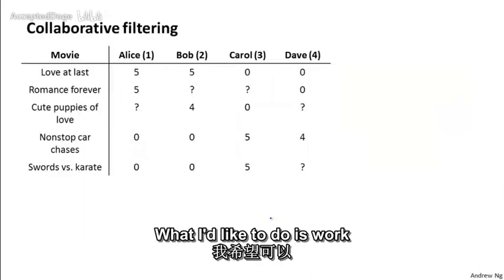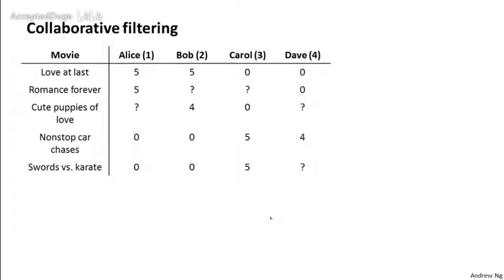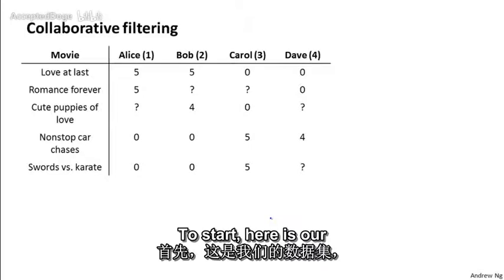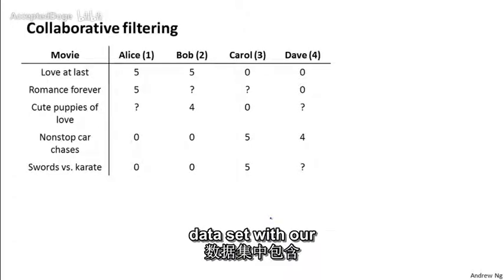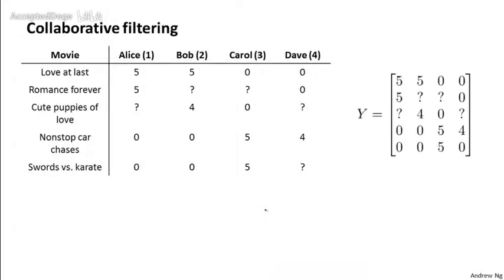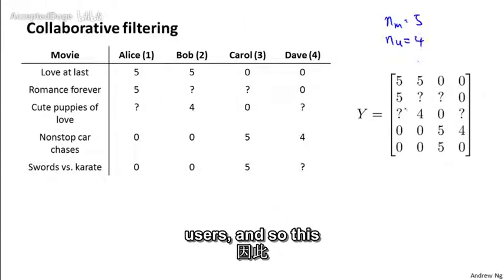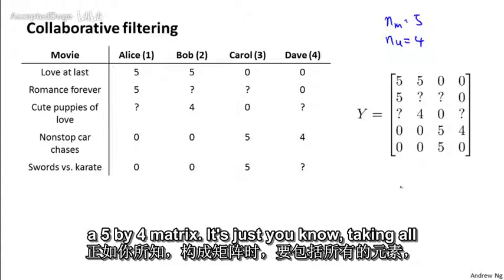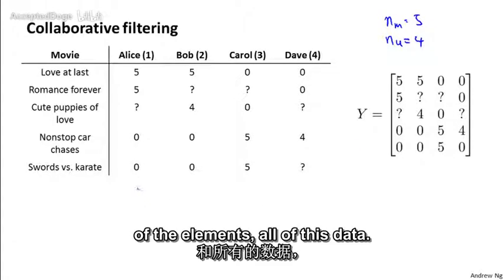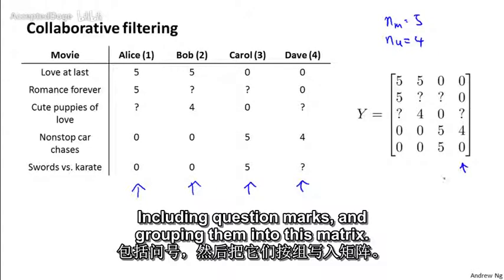What I'd like to do is work out an alternative way of writing out the predictions of the collaborative filtering algorithm. To start, here's our data set with our five movies and what I'm going to do is take all the ratings by all the users and group them into a matrix. So here we have five movies and four users. And so this matrix Y is going to be a five by four matrix, taking all the elements, all of this data, including question marks and grouping them into this matrix.